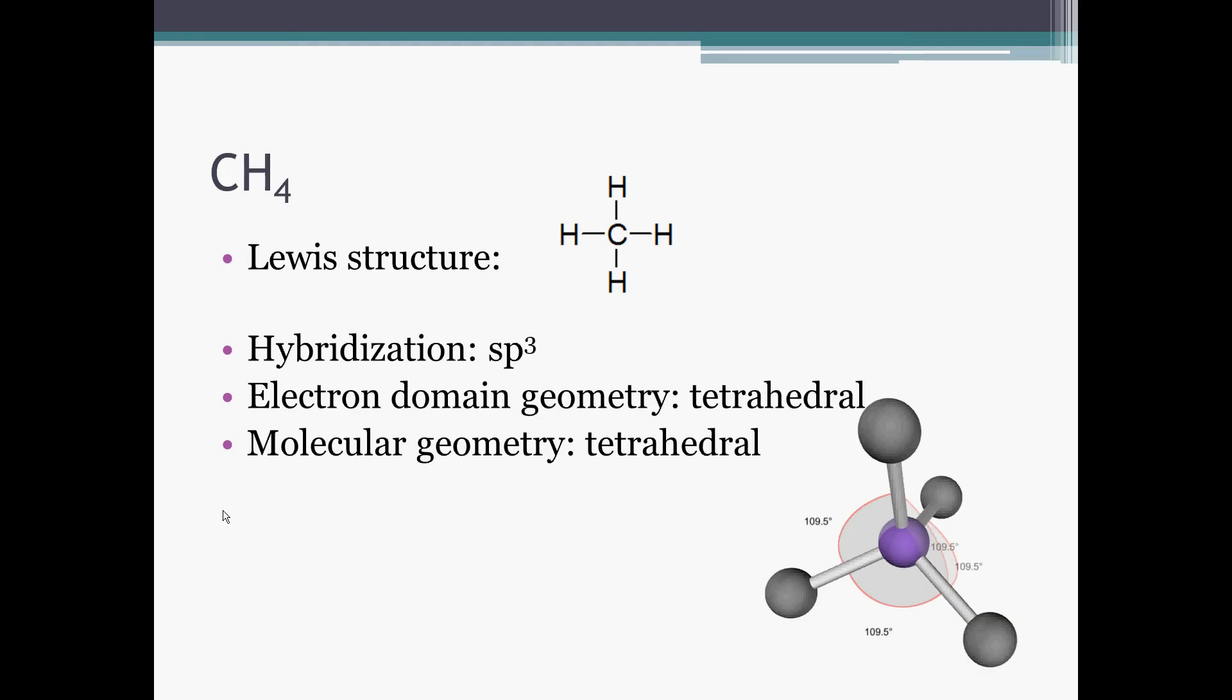In methane, we can see all four of the hybrid orbitals are involved in bonds. Electron domains are tetrahedral, and we do still get this four-sided shape for the molecular shape.